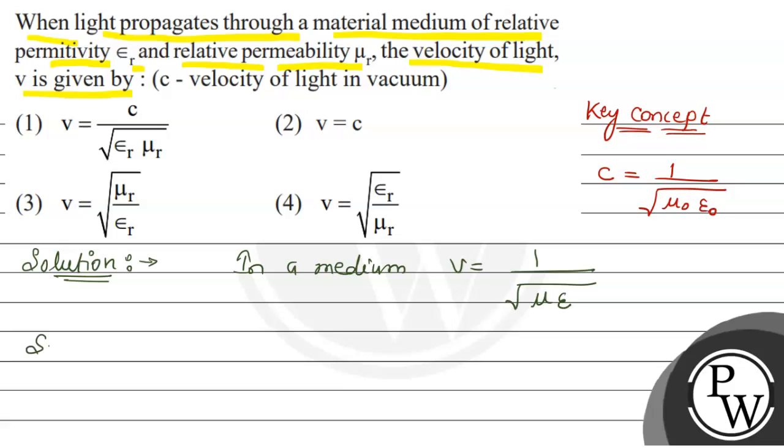Since this will be written as 1 upon root of... the value of mu will be mu_0 mu_r and the value of epsilon will be epsilon_0 epsilon_r.